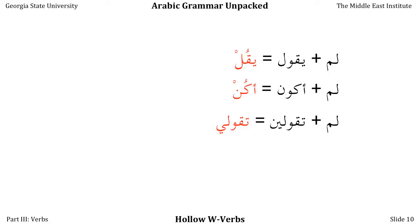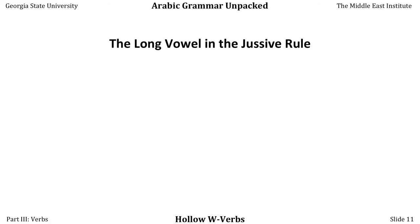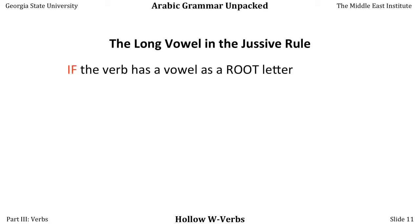This is very frustrating for intermediate students to pick up, because like a lot of things about Arabic, it's hideously and unnaturally complicated. This is a big reason why students have a hard time with intermediate Arabic. For 'they did not say,' again, because we have a long vowel suffix, the WAW does not change to a DHAMMA — we have YAQULU. So let's understand this rule. This is called the long vowel in the JASIV rule, and it's probably the single most frustrating thing about intermediate Arabic.